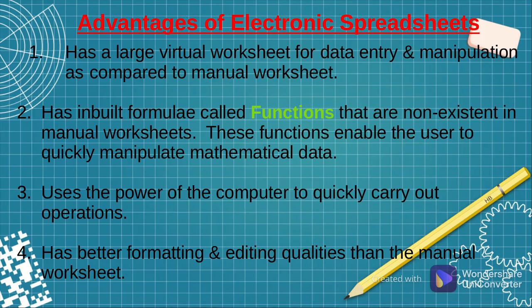Number three is that electronic spreadsheets use the three main advantages of the computer. Computers are fast, they are accurate, they are efficient, so electronic spreadsheets also inherit those good properties of computers. They also have data formatting and editing features which the manual spreadsheet does not have. Formatting refers to enhancing the appearance of a document, and editing refers to making the necessary changes to an existing document, as we did in word processors.